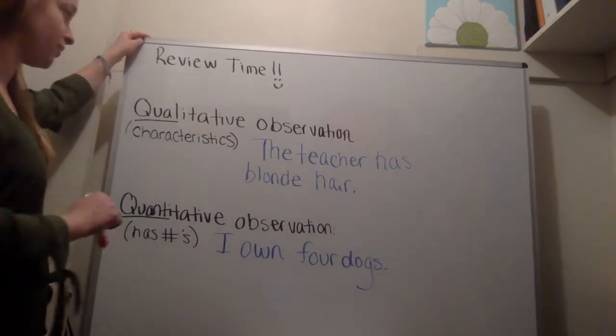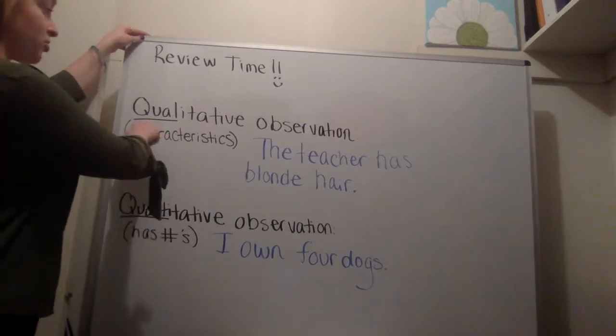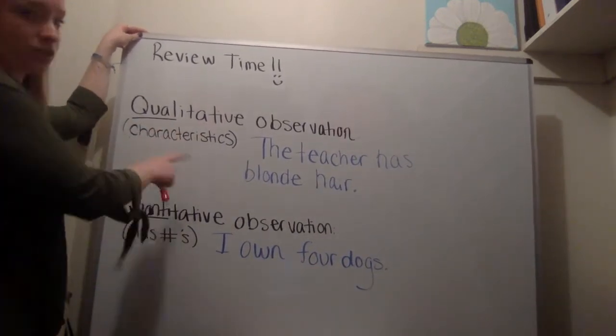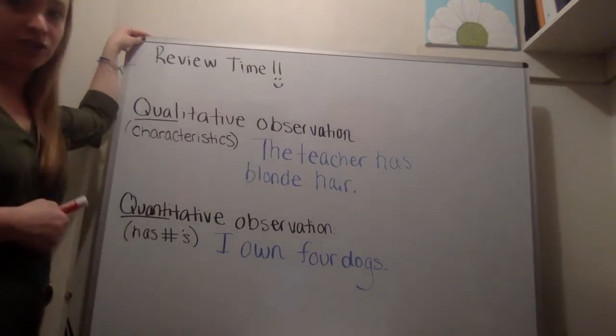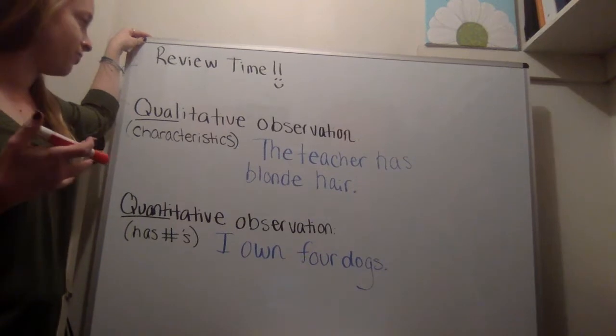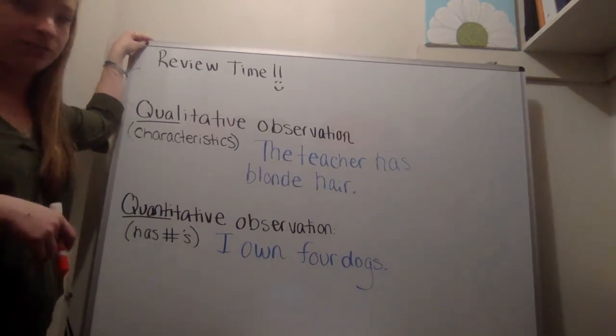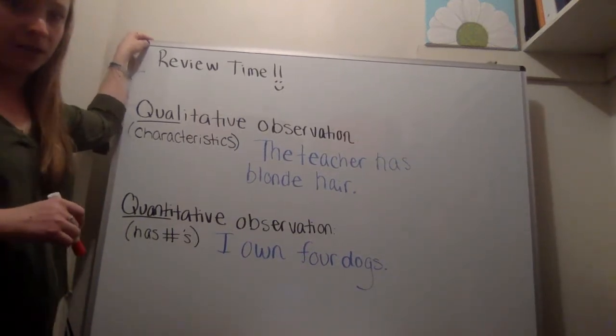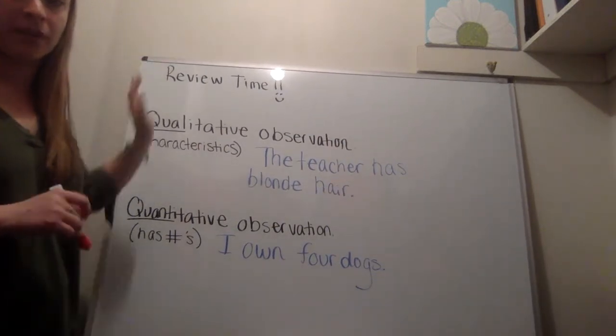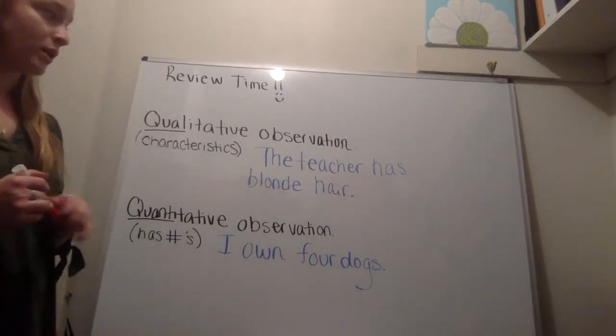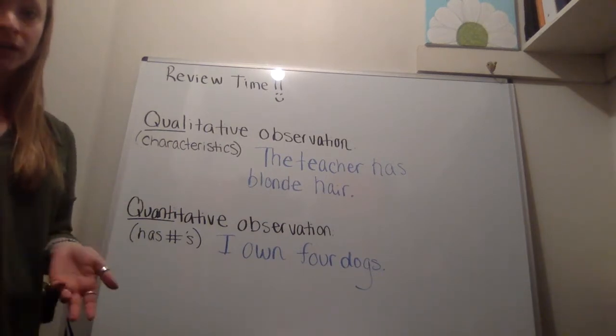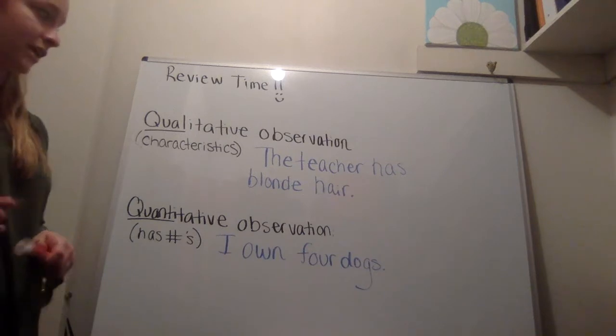So if you can see and you can pause your screen if you need to, there are two types of observations. We have qualitative, which I underlined qual for quality, meaning characteristics. You're describing something's characteristics. So qualitative observations have characteristics that involve a description of something. So my example was the teacher has blonde hair. So if you've already figured out what the quality is, that's awesome. You're pretty set on the review.